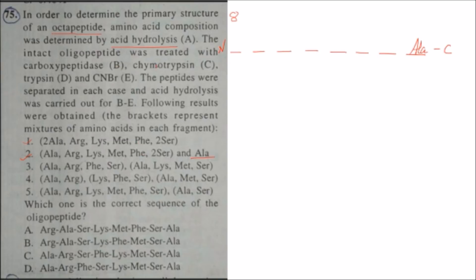Now moving to the third enzyme, which is chymotrypsin. The cutting site of chymotrypsin is after every aromatic amino acid. Looking at the aromatic amino acids here, in this case the only one present is phenylalanine. If we get two products from chymotrypsin hydrolysis, and phenylalanine is present, it means the cut occurs at the C-terminal of phenylalanine. Counting the amino acids — 1, 2, 3, 4 — phenylalanine will be in the fourth position.